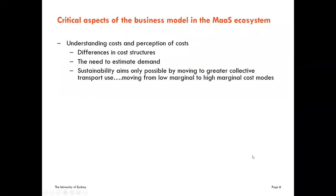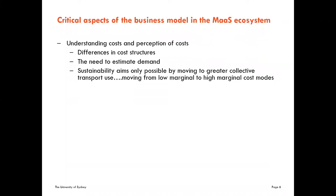We're concerned here with business models, so this slide looks at the critical aspects of the business model in the MAS ecosystem. Understanding cost is important and is the basis for value add. In the MAS ecosystem, the aggregator needs to be aware that the different elements will have different cost structures — for example, train travel is more capital intensive than bus operations. For mode shifters from private car to MAS, it means moving from a low marginal cost mode to a high marginal cost mode as the full cost of travel is incurred at the point of travel.